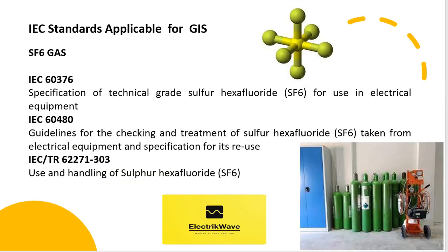SF6 Gas: IEC 60376, Specification of Technical Grade Sulphur Hexafluoride, SF6, for Use in Electrical Equipment. IEC 60480, Guidelines for the Checking and Treatment of Sulphur Hexafluoride, SF6, taken from Electrical Equipment, and Specification for its Reuse. IEC TR 62271-303, Use and Handling of Sulphur Hexafluoride, SF6.